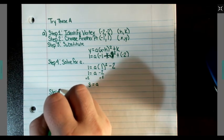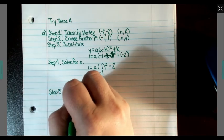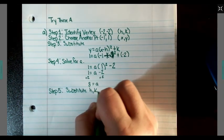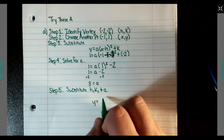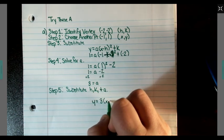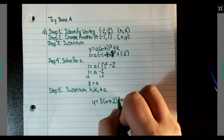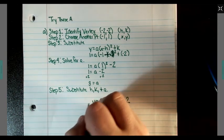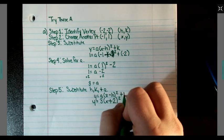Step 5: Substitute. We're going to have 3 times X plus 2 squared minus 2. Because remember this is Y equals A times X minus H squared plus K.